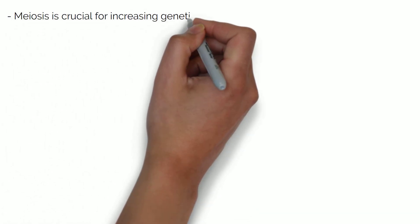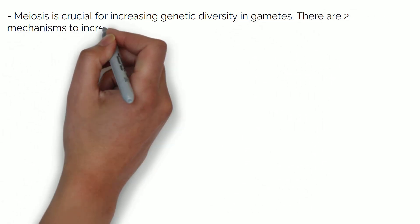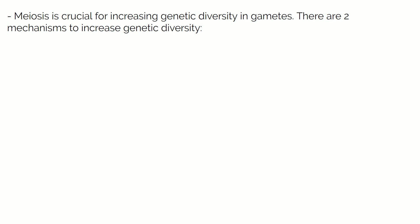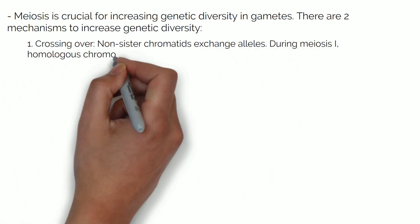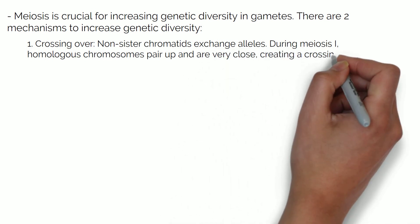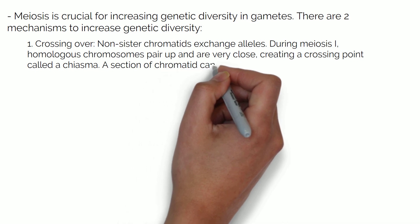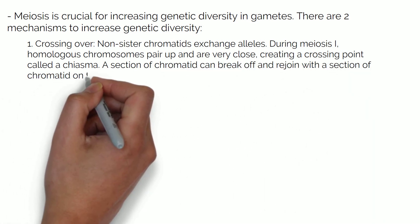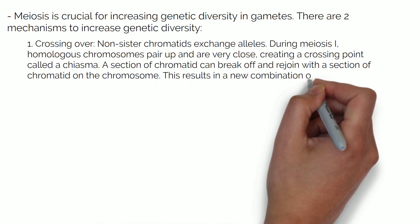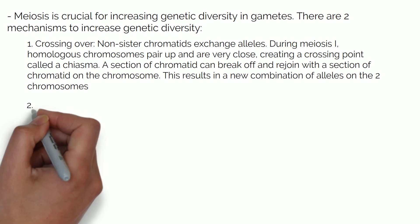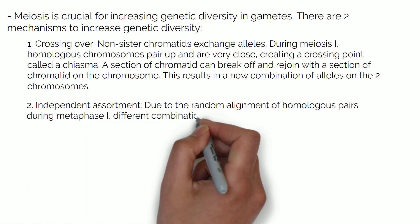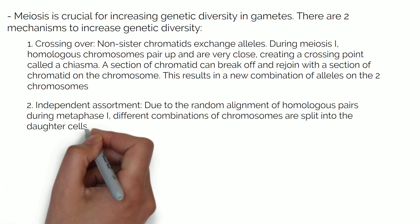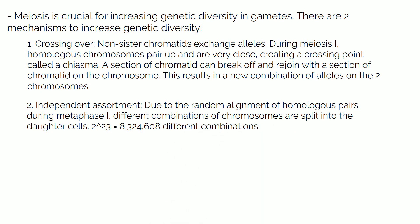Meiosis is crucial for increasing genetic diversity in gametes. There are two mechanisms to increase genetic diversity. Crossing over: non-sister chromatids exchange alleles. During meiosis I, homologous chromosomes pair up and are very close, creating a crossing point called a chiasma. A section of chromatid can break off and rejoin with a section of chromatid on the other chromosome, resulting in a new combination of alleles. Independent assortment: due to the random alignment of homologous pairs during metaphase I, different combinations of chromosomes are split into the daughter cells. This is shown as 2 to the power of 23, which is 8,388,608 different combinations.